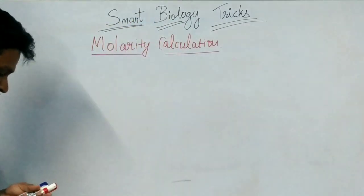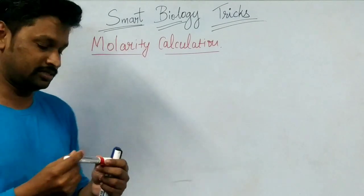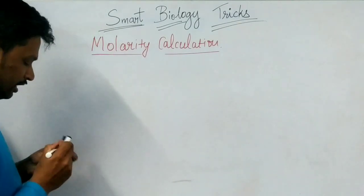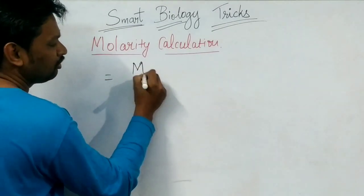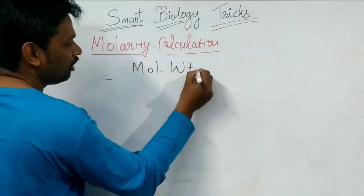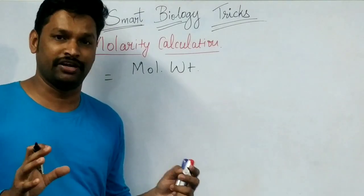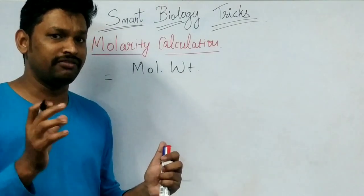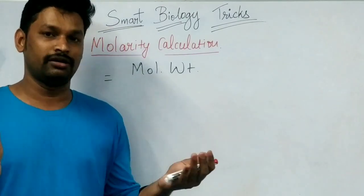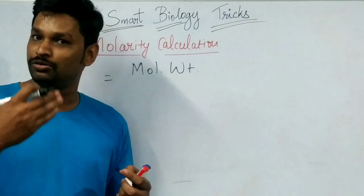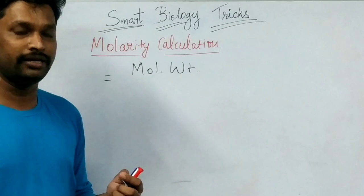For this, we need to understand some information about the chemicals. For calculating the molarity of any chemical, first we need the molecular weight of the chemical. Every chemical has a specific molecular weight, and you can find it on the back side of the chemical box. If you couldn't find the value, you can Google it and get the molecular weight of each chemical.